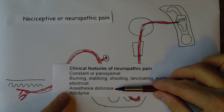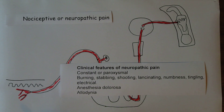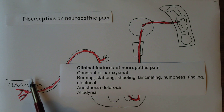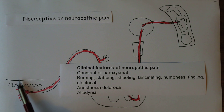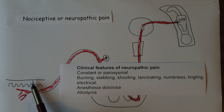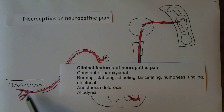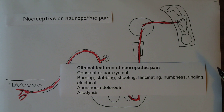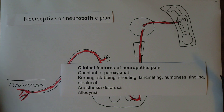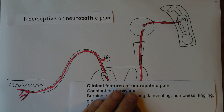Two classic features are anaesthesia dolorosa and allodynia. In anaesthesia dolorosa, an area of skin is not sensitive to touch — it's anaesthetised — but the person still has pain. That is classic of neuropathic pain. Allodynia is where very light touch stimulates pain — just touching the surface of the skin is interpreted as a painful stimulus.